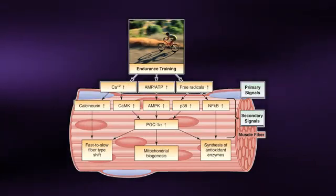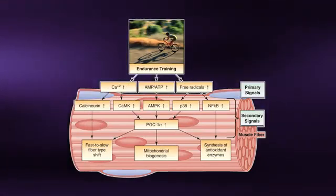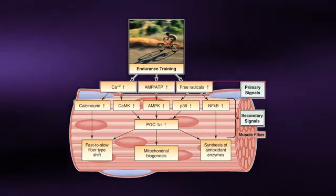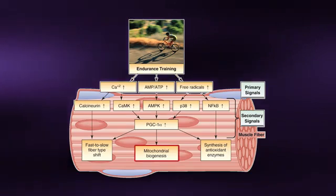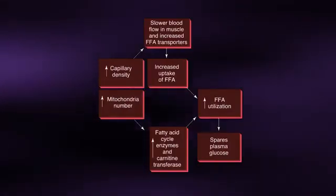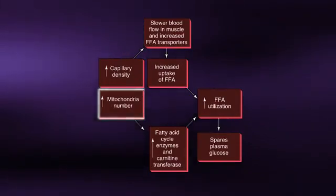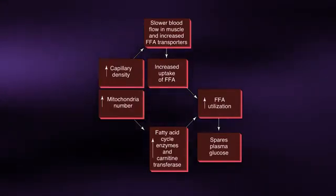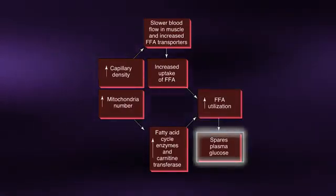The term muscle plasticity refers to the capacity for adaptive change. It is characterized by altered gene expression following a repeated stimulus such as occurs with endurance training, and it applies to all types of muscle proteins including structural, contractile, and regulatory proteins. In this example, a single bout of exercise activates a number of primary signals that, when chronically activated over weeks, will initiate the formation of new mitochondrial proteins, thereby increasing their size and number in the trained muscles. This increase in mitochondrial oxidative capacity associated with endurance training will result in a greater ability to utilize fats for fuel, thereby sparing carbohydrate stores.